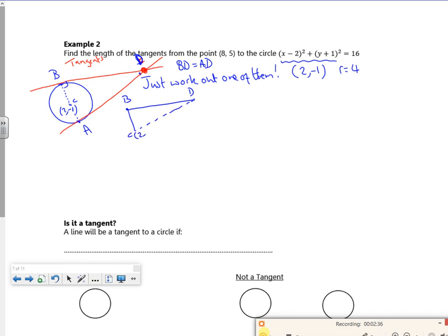I've got that length there. So I've got the center, which is (2, -1), and I've got that point D, which is (8, 5). Right. What I'm going to do, because I've got a right angle there, I'm going to do two lots of Pythagoras. So I'm going to use Pythagoras first. That'll work out C to D. Now I also know that the radius is 4. Once I've done Pythagoras to work out C to D, I'm going to do Pythagoras to work out B to D.